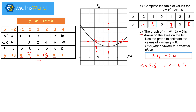Part b is important because students always get this wrong. If it asks whether the graph has roots — this graph has no roots because it doesn't cross zero at any point. They sometimes call that 'no solutions'.